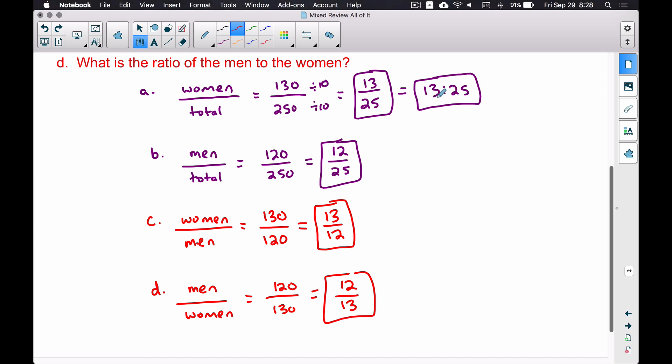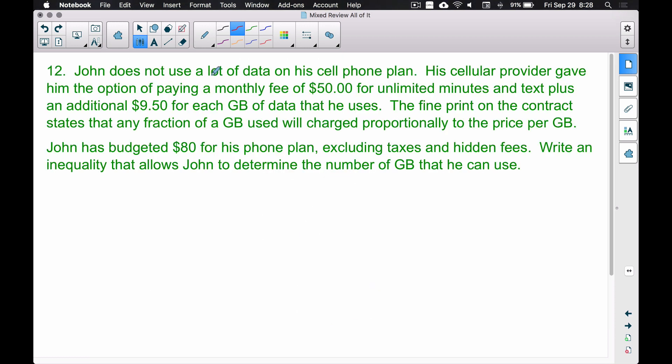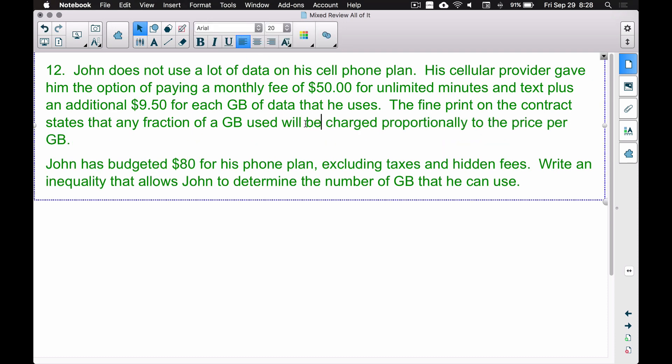On to the next question: John does not use a lot of data on his cell phone plan. His cellular provider gave him the option of paying a monthly fee of $50 for unlimited minutes and text, plus an additional $9.50 for each gigabyte of data that he uses. The fine print of the contract states that any fraction of a gigabyte used will be charged proportionally to the price per gigabyte. That's actually good news. Sometimes the fine print is not good news. The fine print could have said anytime you go over a certain gigabyte, it's automatically going to round you up to the next one. That's not so good. But what this fine print here is saying is if John uses 2.1 gigabytes, he's going to be charged for 2.1 gigabytes.